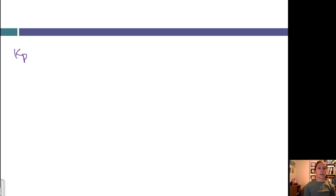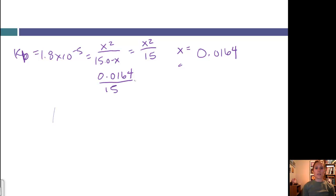Our Kb, 1.8 times 10 to the negative fifth is equal to our products, which were each X. This becomes X squared over our 15 minus X. We're going to make the same assumption that we did for acids, which is that since the Kb is very small, the 15 minus X, the X is going to be negligible. So we're just going to turn that into a 15. We can solve for X by multiplying by 15 and square rooting. If I do that math, I get a value of 0.0164 for my X value. Then I want to check my assumption. I'm going to take my X value divided by my initial times 100. If I do that math, I get 0.109%. So my assumption is valid.